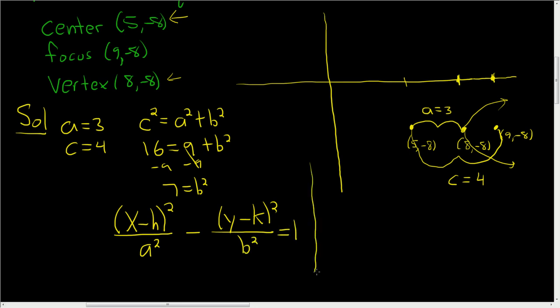Now we'll carefully plug everything in. x minus h - h is 5, and k is negative 8. So it's going to be (x - 5) squared. a squared is 9 because a is 3.